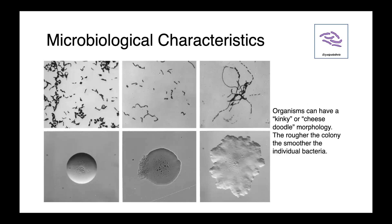Here you can see variability in colony morphology and also morphology of the individual cells. What's really interesting is that as our colonies go from very smooth and regular to more and more irregular, our cells do the opposite. The smoothest colonies tend to have the most crooked or kinky morphology cells, while our most irregular colonies have the smoothest and most regular cells. So there's this inverse relationship between cellular regularity and colony regularity.